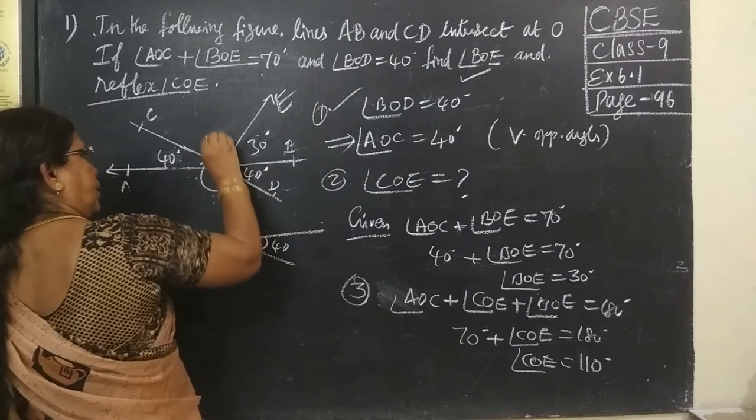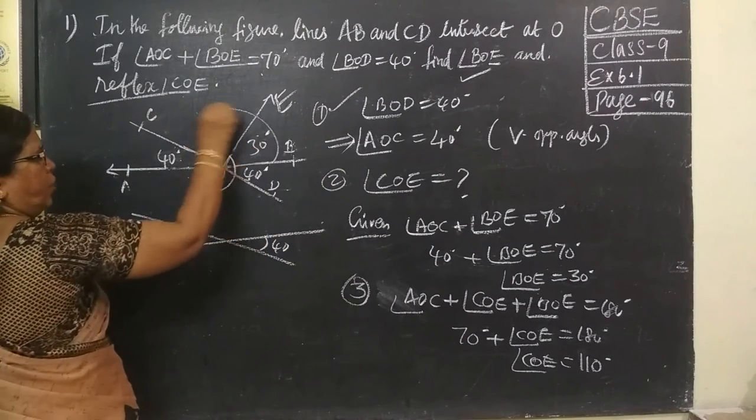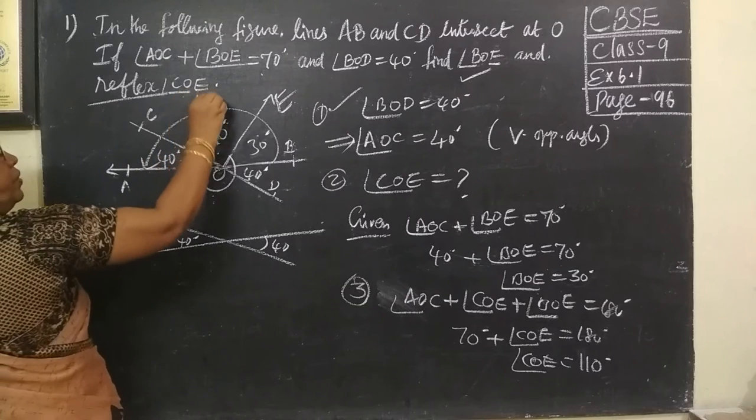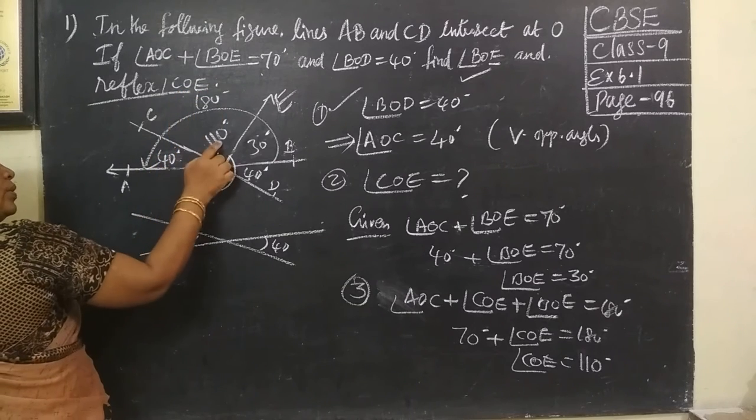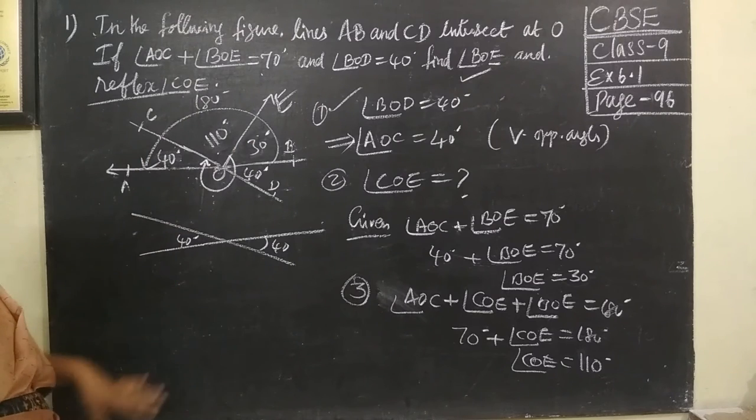So, this angle is 110. Now, you verify it should be equal to 180 degrees. So, add all this, this should be equal to 180 degrees. So, this is 150 plus 30, 180 degrees. Angle in a straight line is 180 degrees.